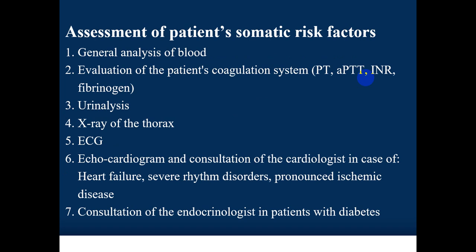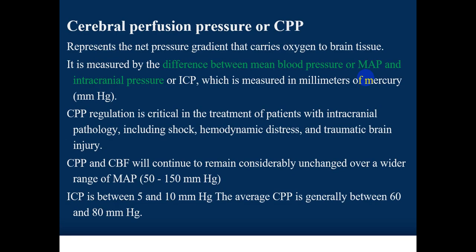Assessment of patient somatic risk factors includes general blood analysis, evaluation of the coagulation system — prothrombin time, activated partial thromboplastin time, INR, and fibrinogen — urinalysis, chest X-ray, and EKG. An echocardiogram and cardiology consultation are needed in cases of heart failure, severe rhythm disorders, or pronounced ischemic heart disease. Consultation with an endocrinologist or other specialists is indicated for diabetes, renal replacement therapy, or liver disease.